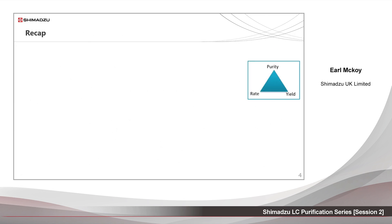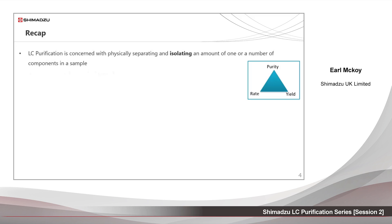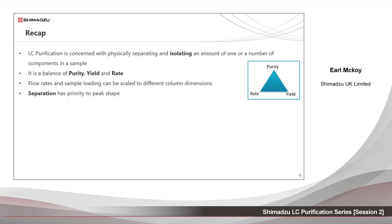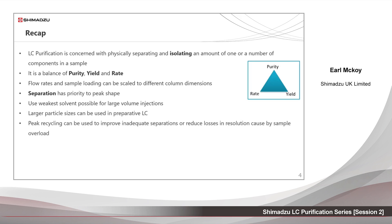In session 1, we said preparative LC is concerned with physically separating and isolating an amount of one or a number of components in a sample. That balance needs to be struck between purity, yield and rate. That flow rates and sample loading can be scaled to different column dimensions. That separation has priority to peak shape. That we should use the weakest solvent possible for large volume injections. That larger particle sizes can be used in preparative LC. And that peak recycling can be used to improve inadequate separations or reduce losses in resolution caused by sample overload.